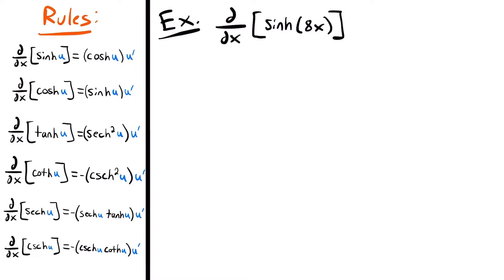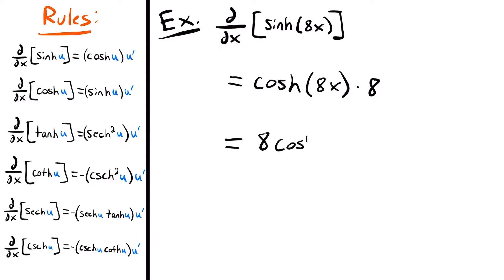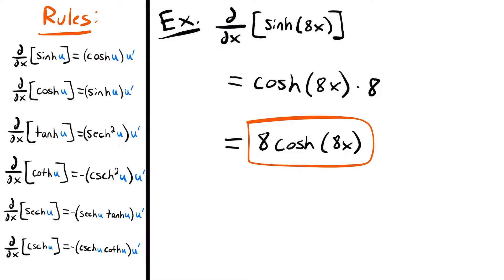In this case, our inside function u is 8x. Using that rule, the derivative will be equal to hyperbolic cosine of 8x times the derivative of 8x. The derivative of 8x is just 8, because when you take the derivative of x to the first power, it equals its coefficient. So the derivative is equal to 8 times hyperbolic cosine of 8x.